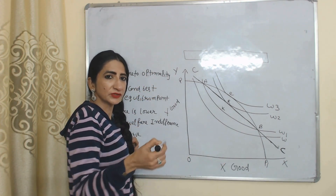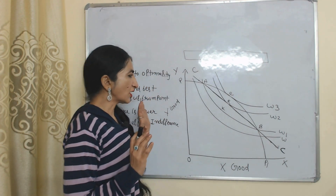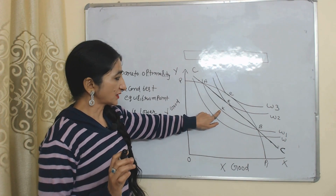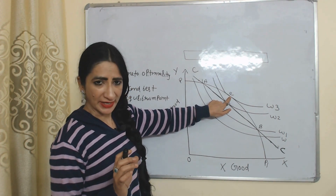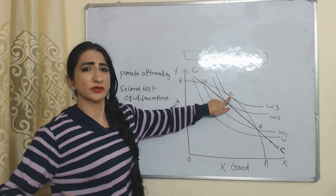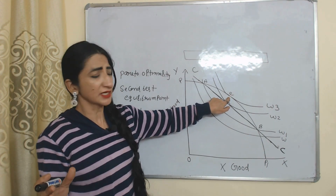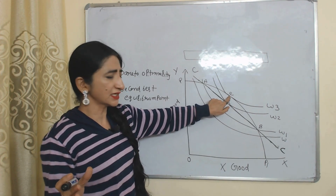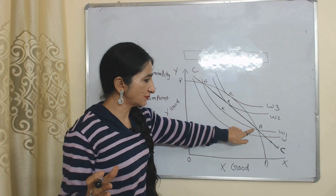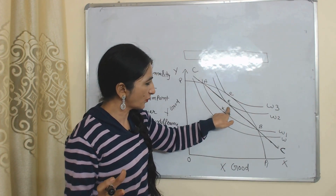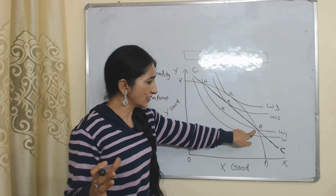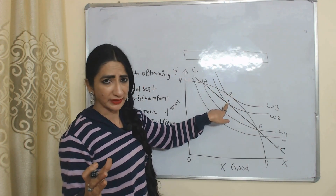Suppose our economy starts at point K, but we can't move towards point E because E is the Pareto optimality point — our first best equilibrium. Because of some problems we can't achieve point E, so we can't move from K to E. However, we can move towards points A, R, and B — that is, any point which lies on the constraint curve.